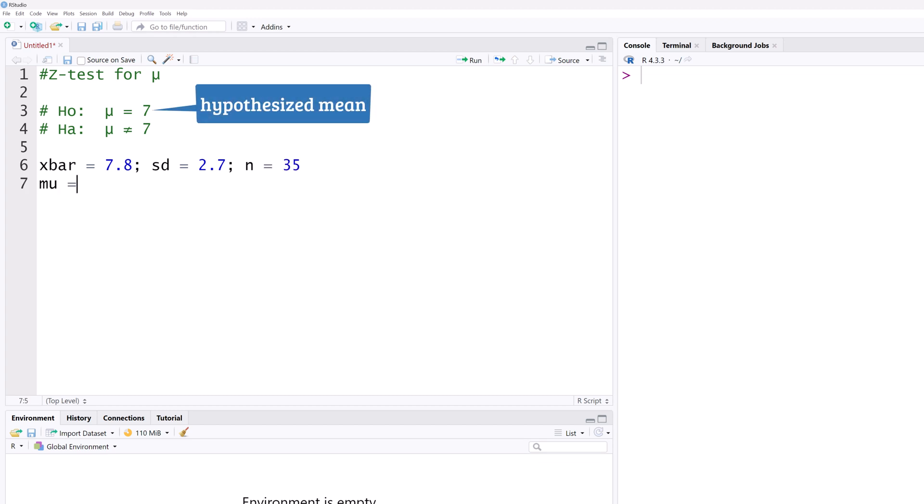The hypothesized mean mu is 7. To perform the Z test, we need to calculate the test statistic using the following formula. Z equals X bar minus mu divided by standard deviation divided by the square root of n.